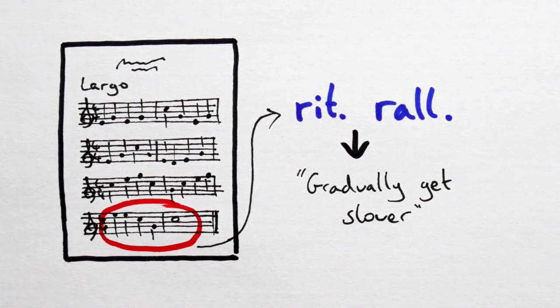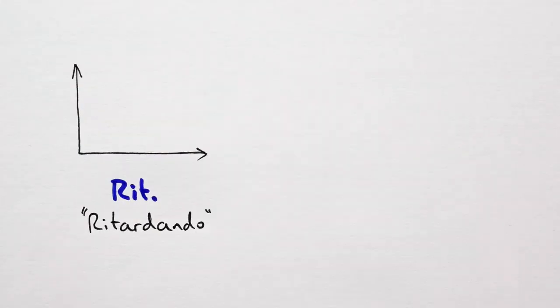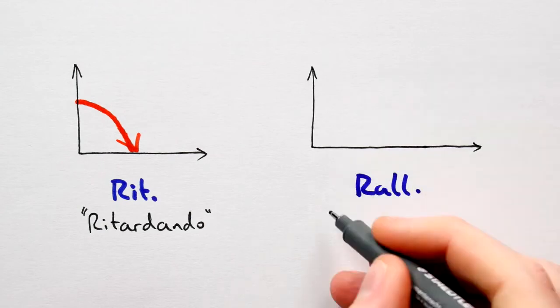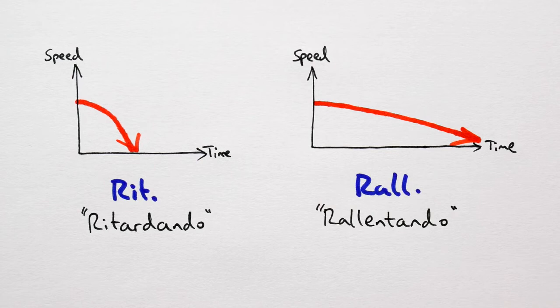The distinction between the two is kind of nitpicky. Rit, short for ritardando, means to get slower. Ral, short for rallentando, means to gradually get slower. See, what did I tell you? Very nitpicky.